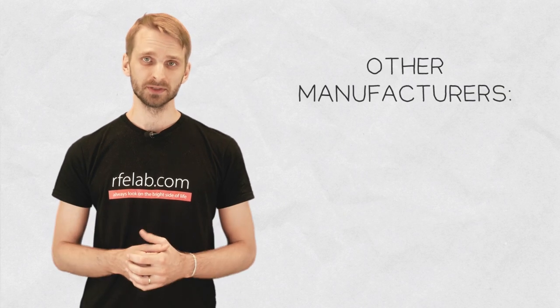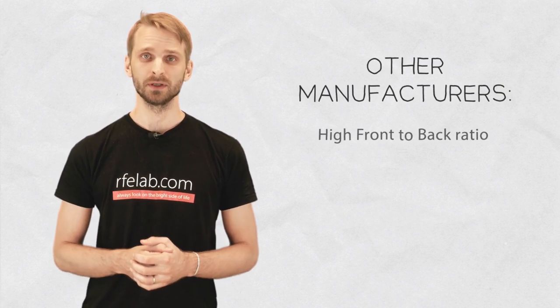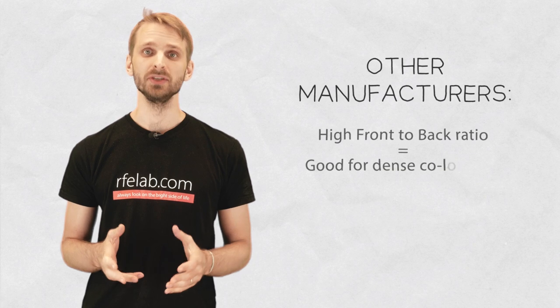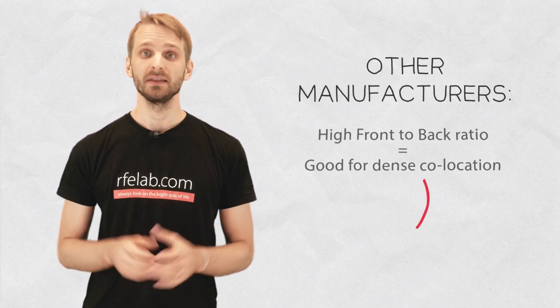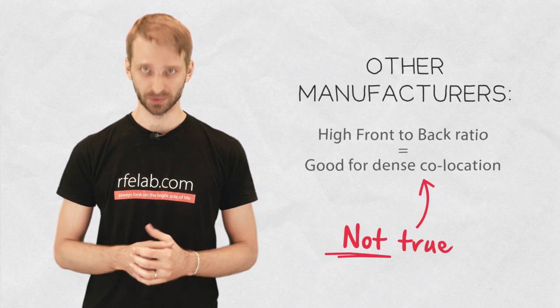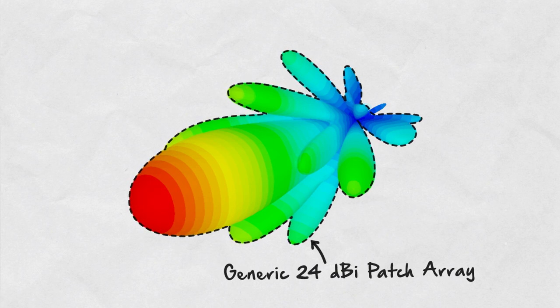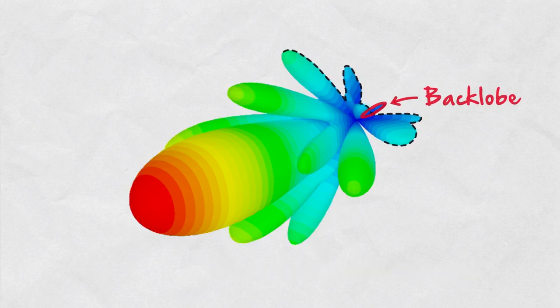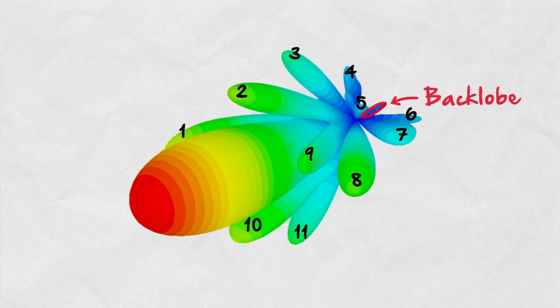Manufacturers in the WISP industry often claim that good front-to-back ratio means an antenna is good for dense collocations. This is simply not true. In reality, the back lobe is only one out of many side lobes antennas used in the WISP industry typically have, making it largely irrelevant.